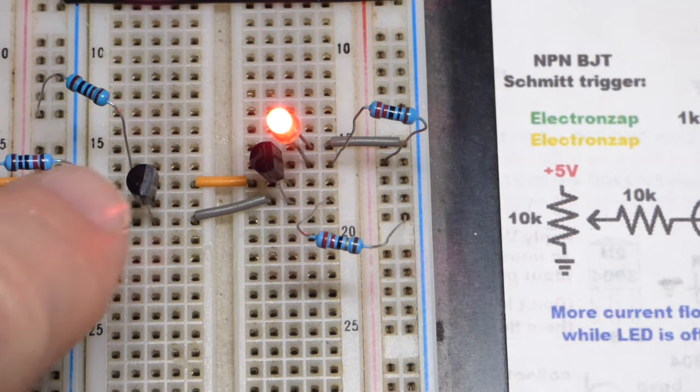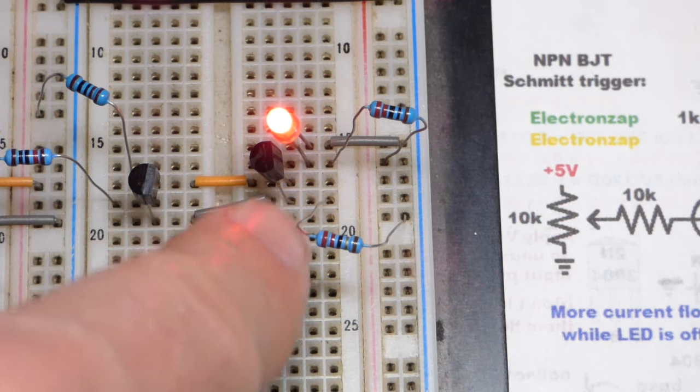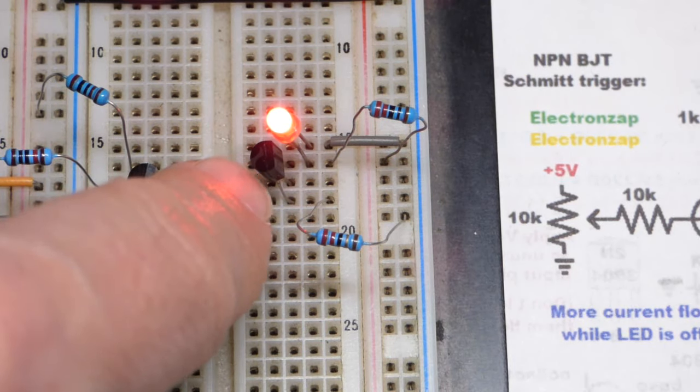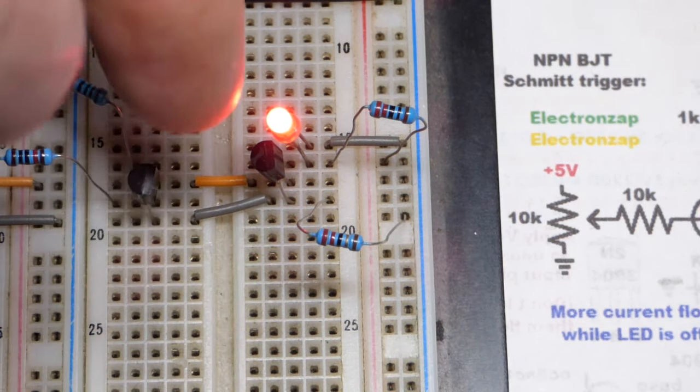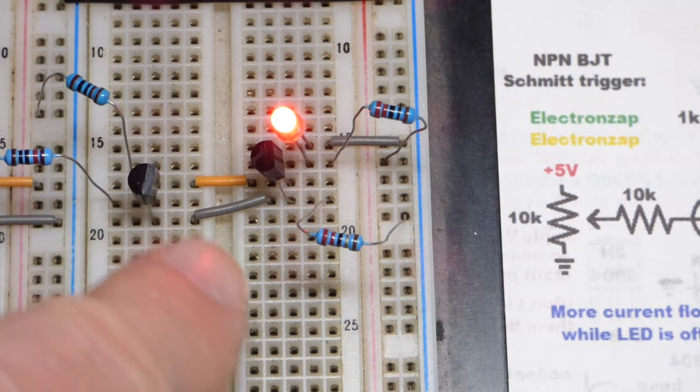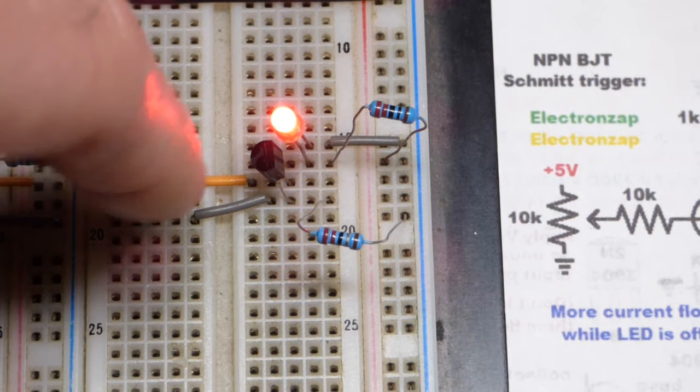And the reason why that transistor is off is because this one is on. So when it's on, you can see we've got ground there. And so it cuts the voltage. It drops it to zero volts, basically. Probably a little bit more, but in any case, it's pulling down. So yeah, this one is on.